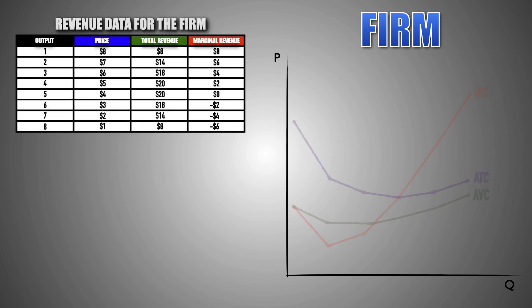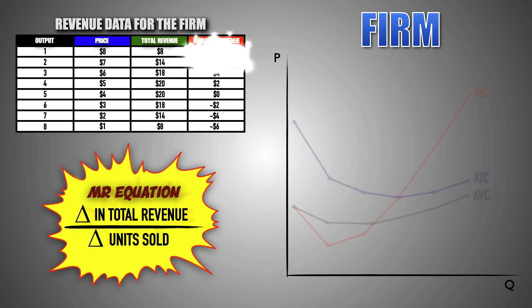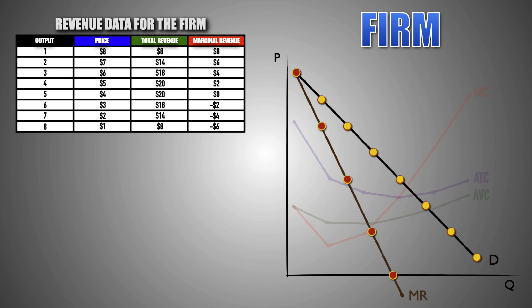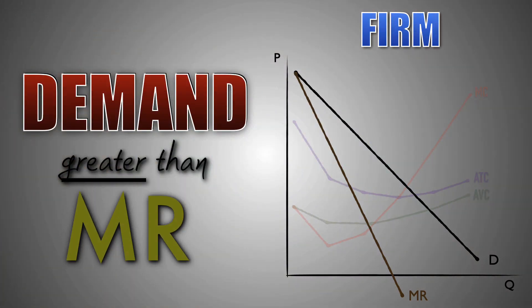Assume that this is the revenue data for an imperfectly competitive firm in the industry for Good M. Here we can see the price per unit at each quantity demanded, representing the demand curve for the firm. We can also see the total revenue for the firm at each level of output, and the marginal revenue of each additional unit of Good M sold. As the firm reduces its product price and sells greater quantities of Good M, notice that the marginal revenue gained from each unit sold is less than the price of the product. When plotting the product price and marginal revenue earned when each additional unit is sold, you can see that the marginal revenue of each unit of Good M is less than the price per unit at every quantity demanded. As a result, the firm's marginal revenue curve is below its demand curve, representing that demand and price is greater than marginal revenue for the imperfectly competitive firm.